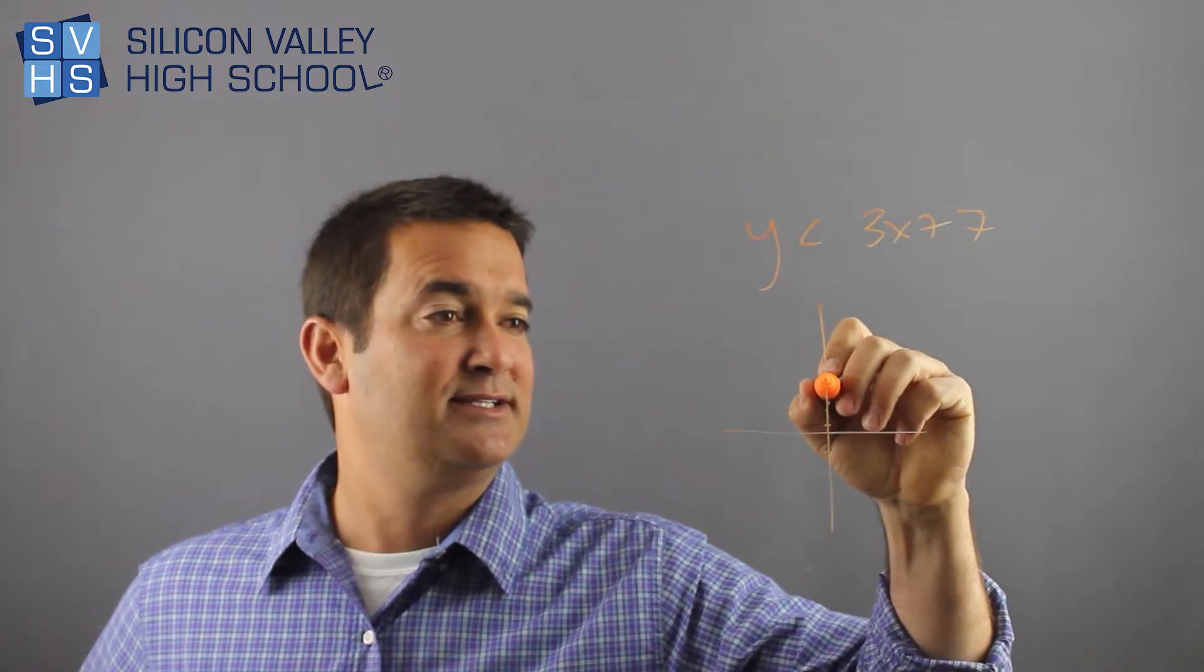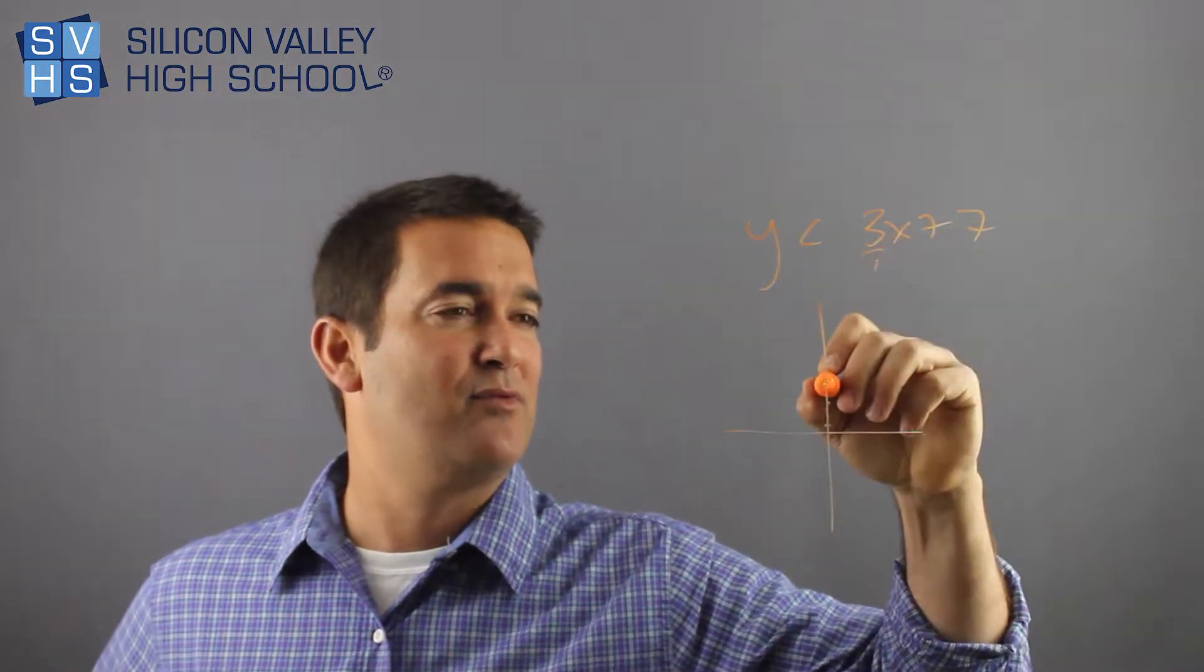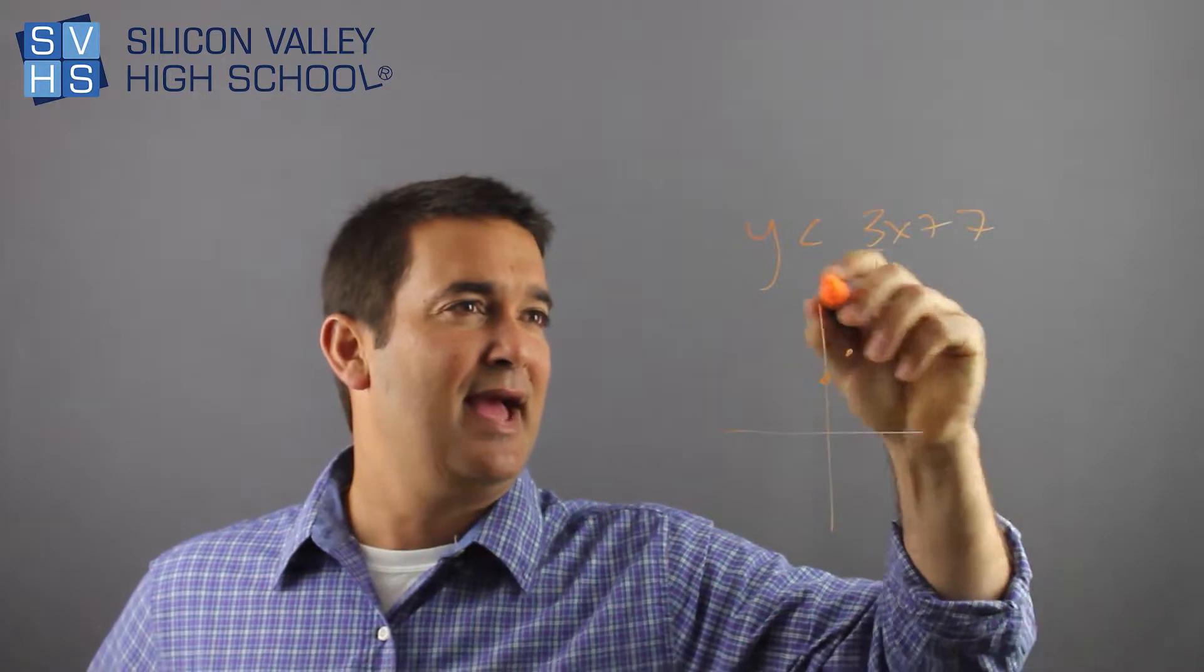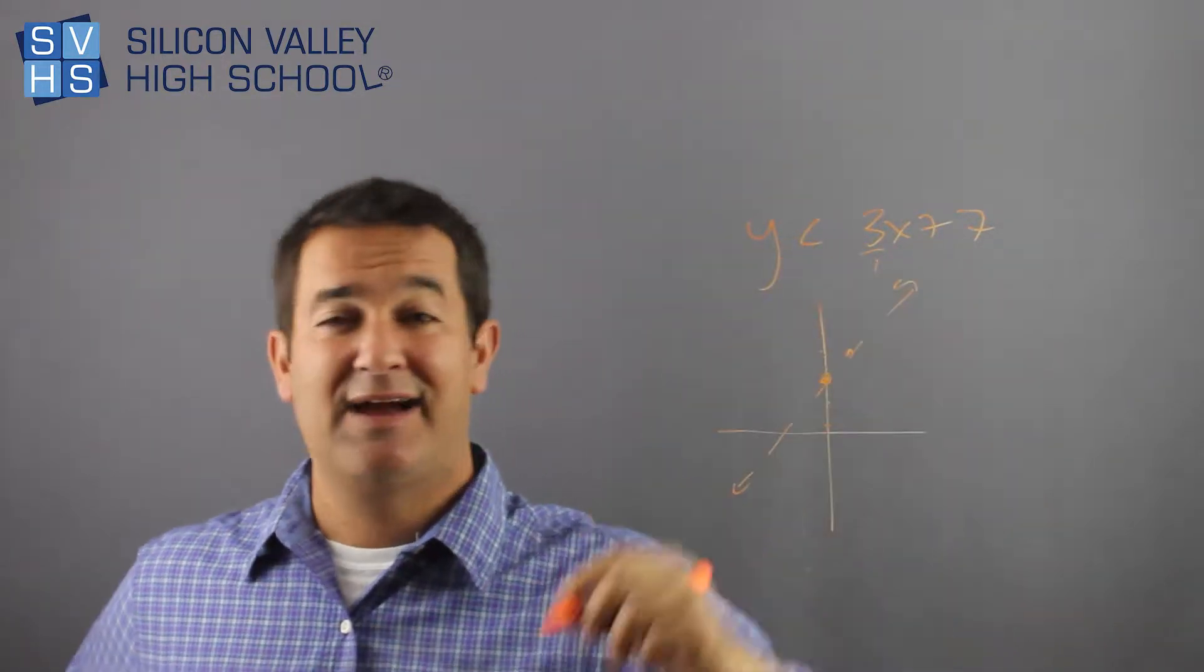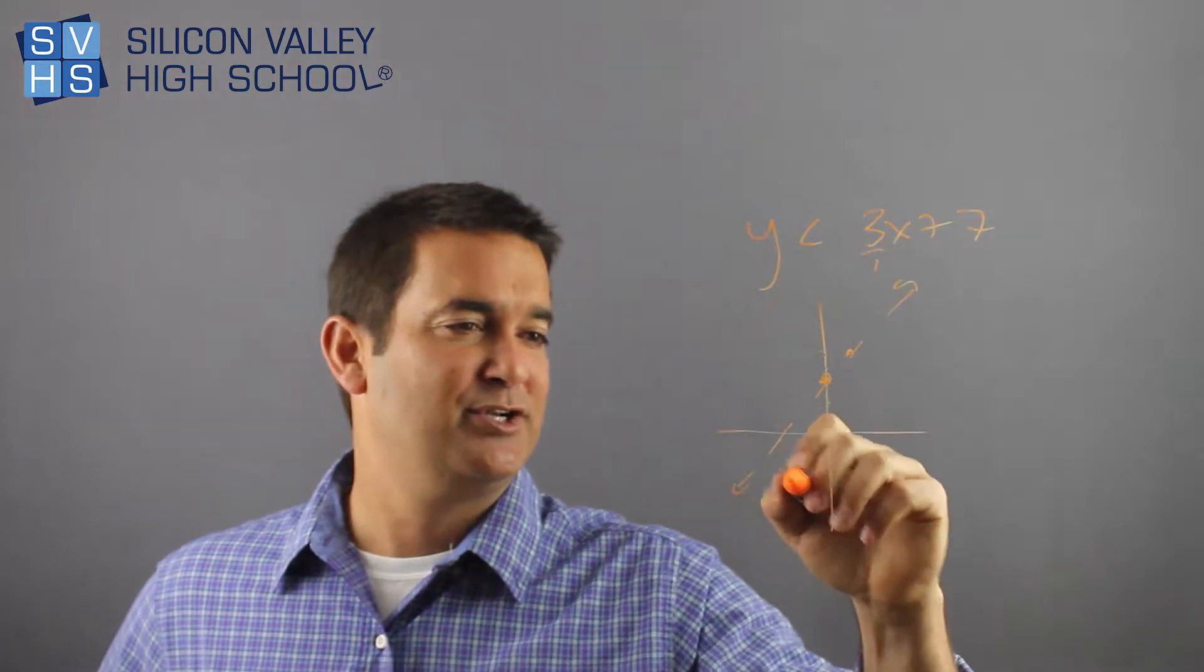Go up 7: 1, 2, 3, 4, 5, 6, 7, put a point, up 3 over 1, 1, 2, 3 over 1, and it's a dotted line. And we see that it's everything less than, so I'm going to shade down here.